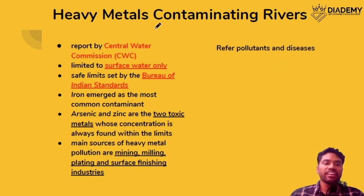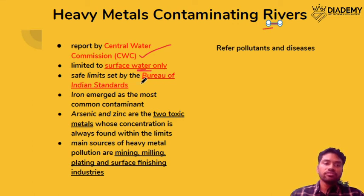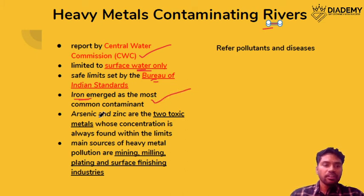The next topic is heavy metals contaminating rivers. This report is given by the Central Water Commission, though it covers surface water only. It compares findings against the limits given by the Bureau of Indian Standards. They found that iron has emerged as the most common contaminant. Arsenic and zinc are two toxic metals whose concentration has been within the limits. Sources of these metals include mining, milling, plating, and surface finishing industries.